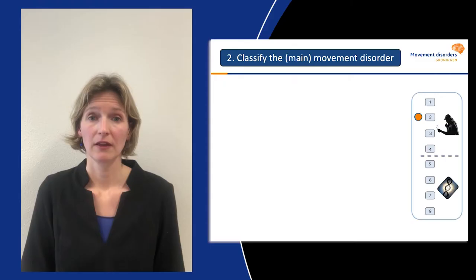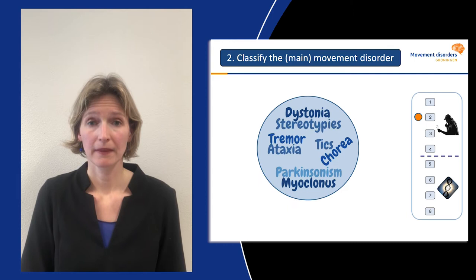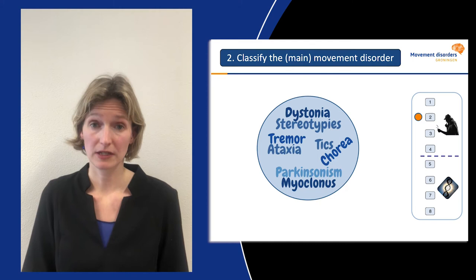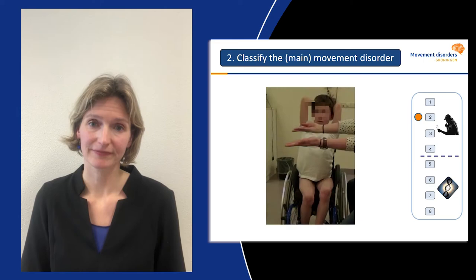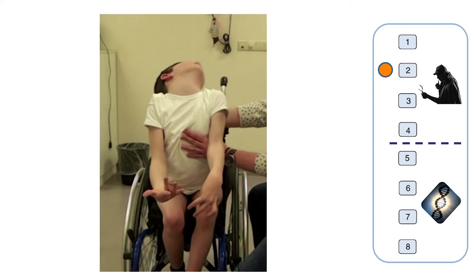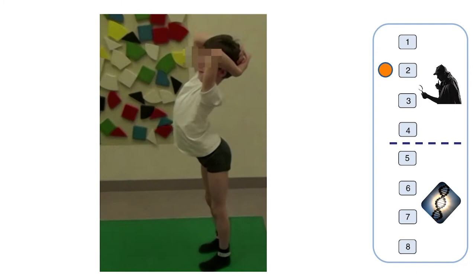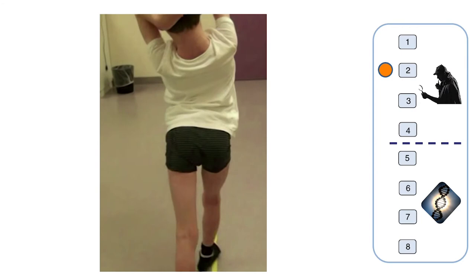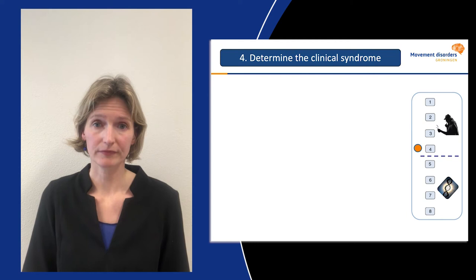The next step is to classify the movement disorder. In our paper, we provide definitions and videos of all main pediatric movement disorders to facilitate recognition in clinical practice. Here you see the same patient two years later. As you can see, he developed severe generalized dystonia with a characteristic sensory trick — when he touches his head, the dystonic posturing of the neck improves.